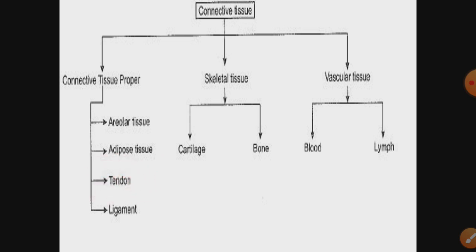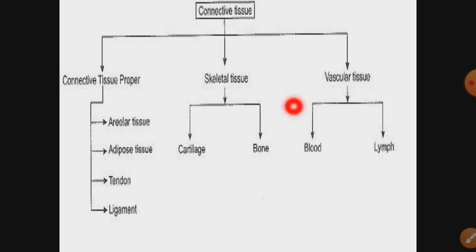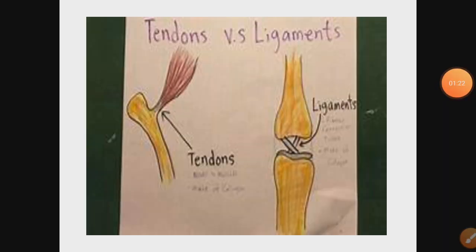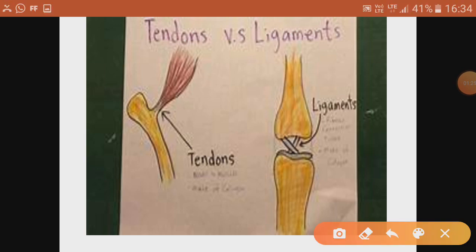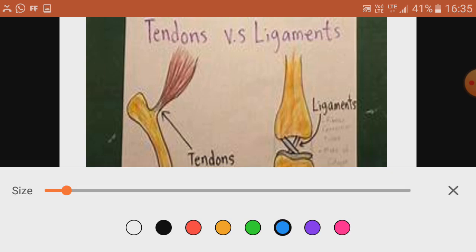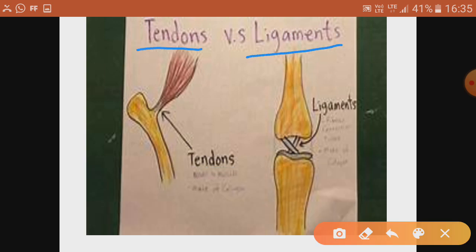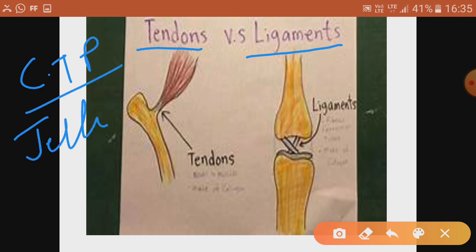In skeletal tissue, there is a solid matrix, further divided into cartilage and bone. Vascular tissue has a fluid matrix and comprises blood and lymph. As we are discussing connective tissue proper — tendons and ligaments — they have a jelly matrix.